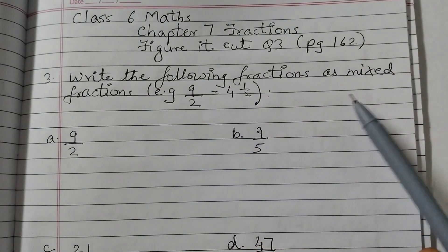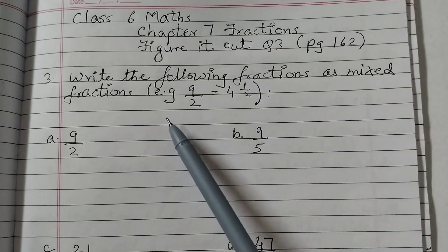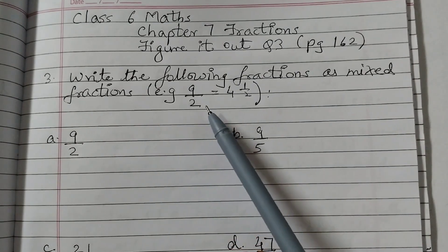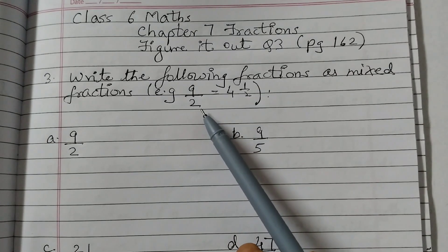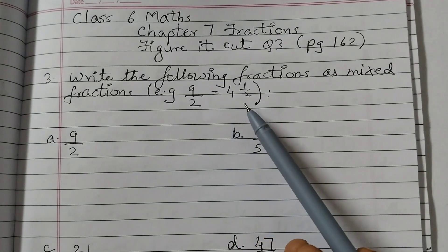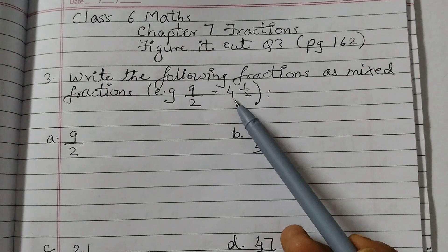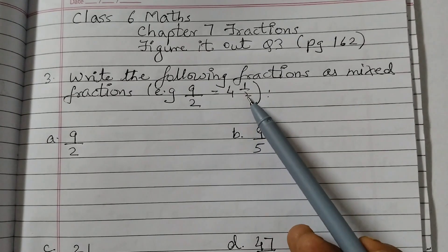Write the following fractions as mixed fractions. For example, 9 upon 2. 9 upon 2 is an improper fraction. This is equal to 4 and 1 half, that is 4 whole and 1 half more.